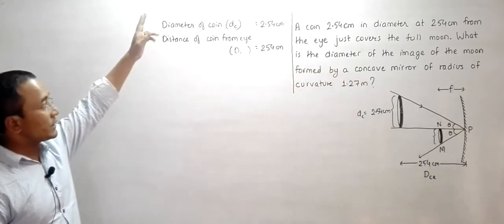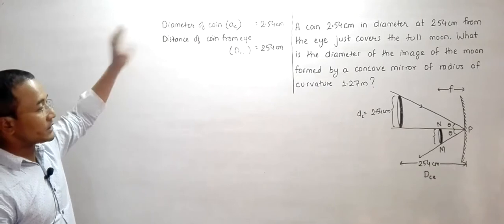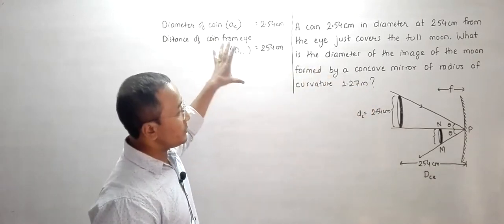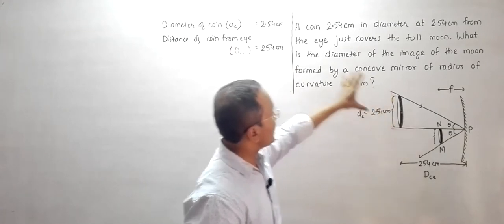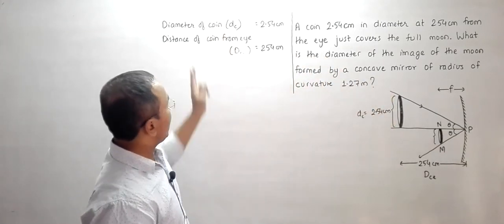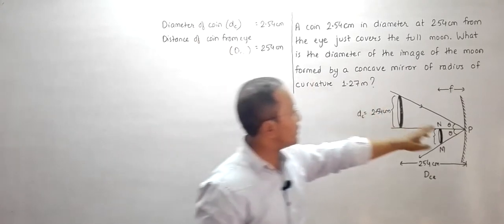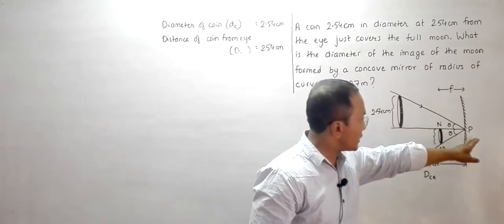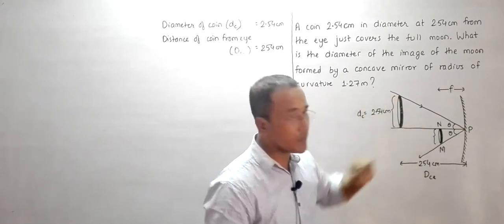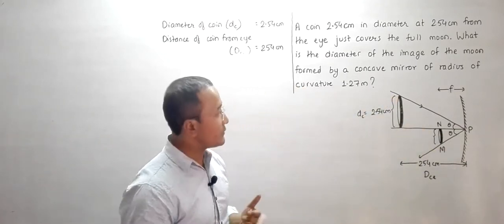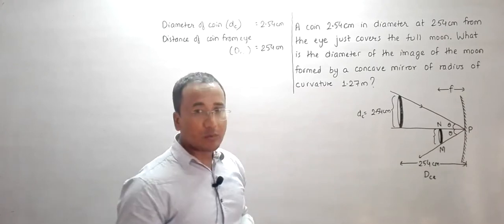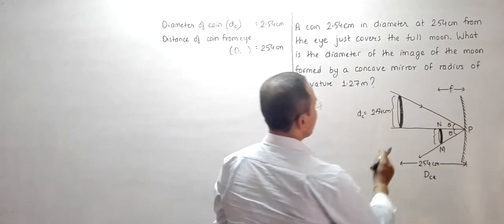Since the coin just covers the moon, once you look at the coin you cannot see the moon behind it. The angle formed by the moon at the position of the eye should be the same as the angle formed by the coin. They have used the coin as a reference to define this angle comfortably.